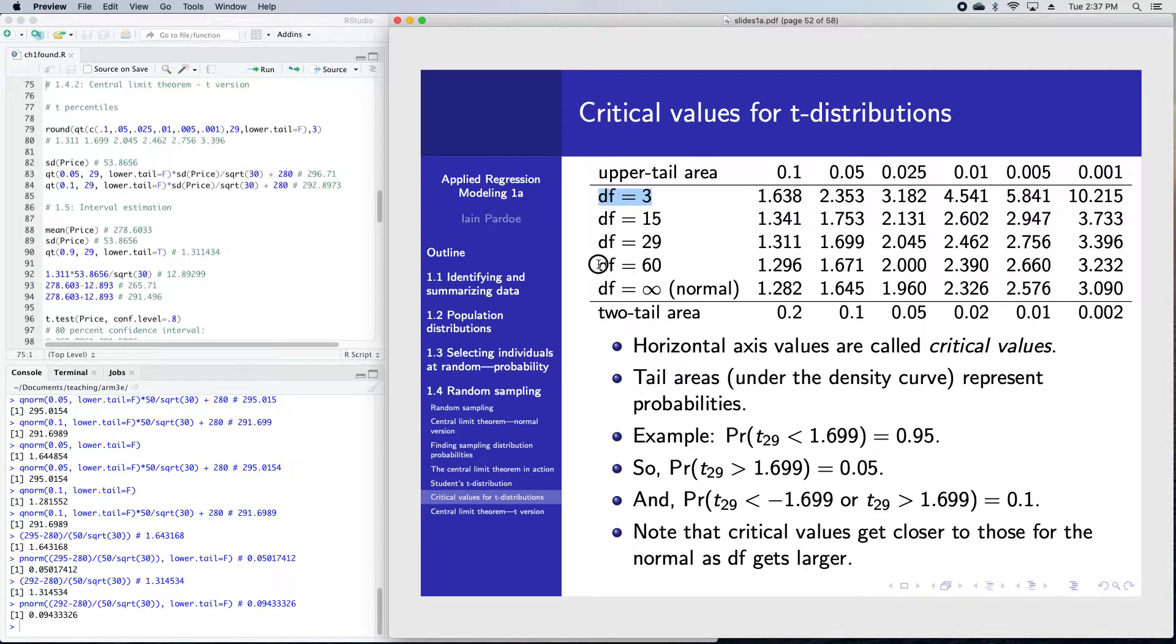Conversely, when your sample size gets bigger, so say your sample size was 61 degrees of freedom equals 60, these critical values are getting smaller. Eventually, if you go all the way to infinity, you actually get a normal distribution. These numbers here in this row are equivalent to the numbers that we saw in the normal table before.